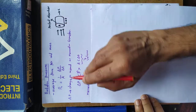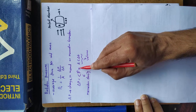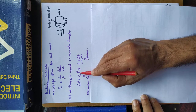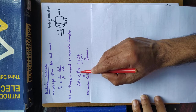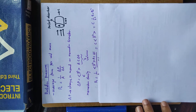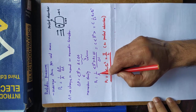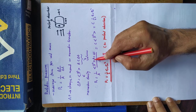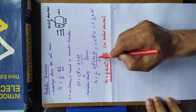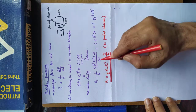The change in momentum or momentum transfer delta P is equal to average momentum density into volume. Momentum density means momentum per unit volume, so that times volume will give you the total change in momentum or momentum transfer. So radiation pressure PR is equal to 1 over A times delta P, divided by delta T.